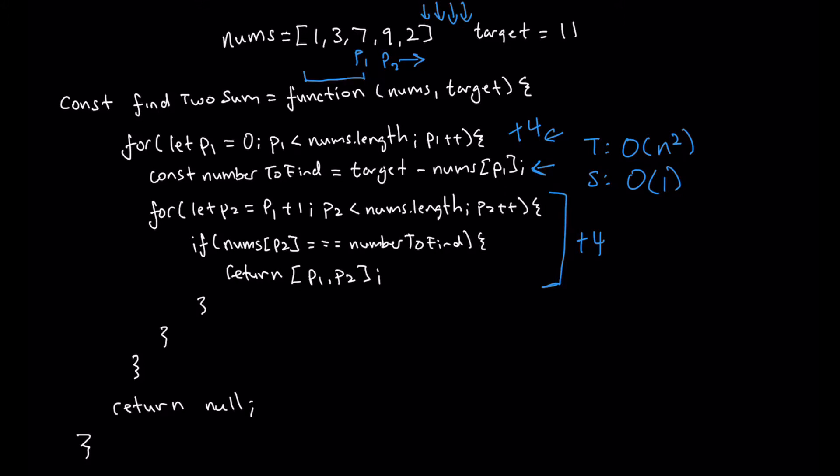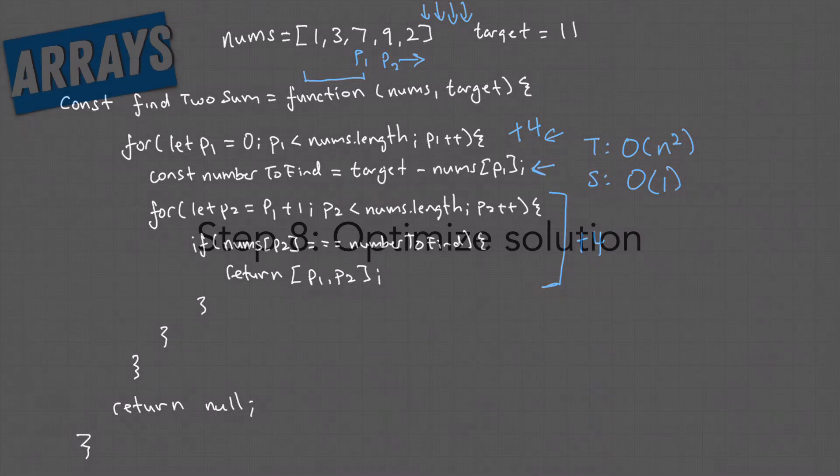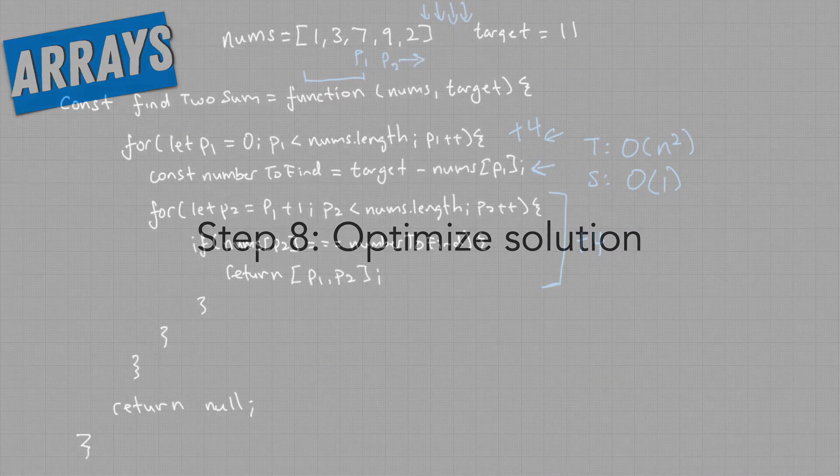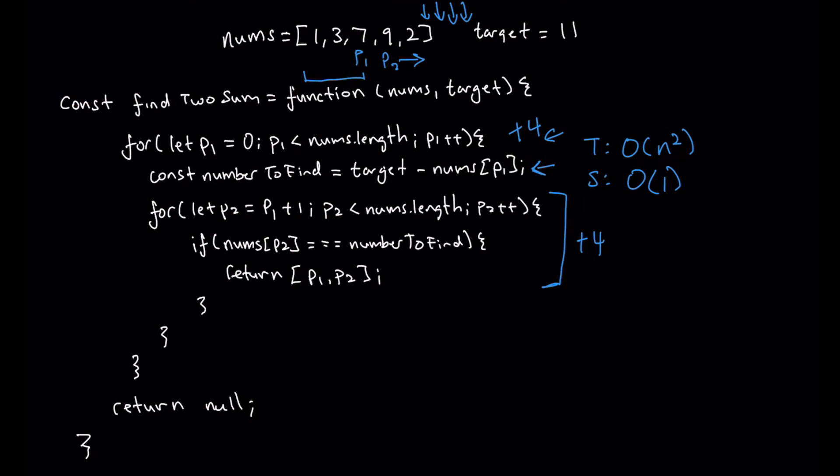So when we present this to our interviewer, our interviewer will now ask us can we come up with a better solution, which leads us to step eight: optimize. Well, just by looking at our time and space complexity, the moment we see that one of them has n squared or worse complexity, we know that there probably is a better solution. N squared is actually really bad complexity whether it is for space or time. That's a big hint to us that we can come up with a better solution.